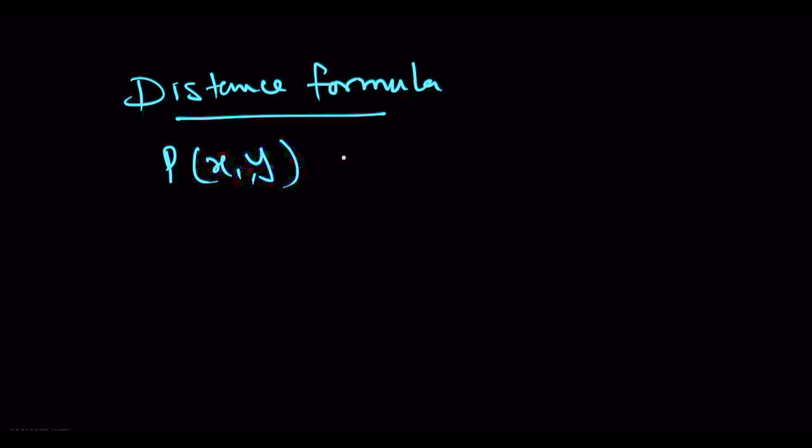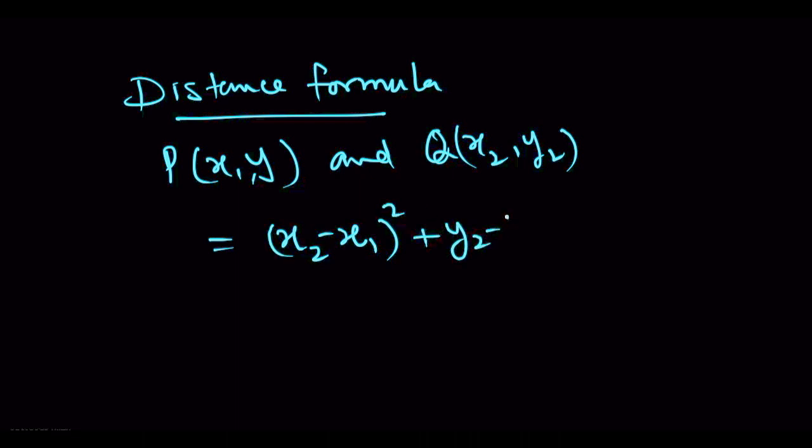Let's revise coordinate geometry. First is distance formula. If P is (x1, y1) and Q is a point (x2, y2), then distance formula is square root of (x2 minus x1) whole square plus (y2 minus y1) whole square.